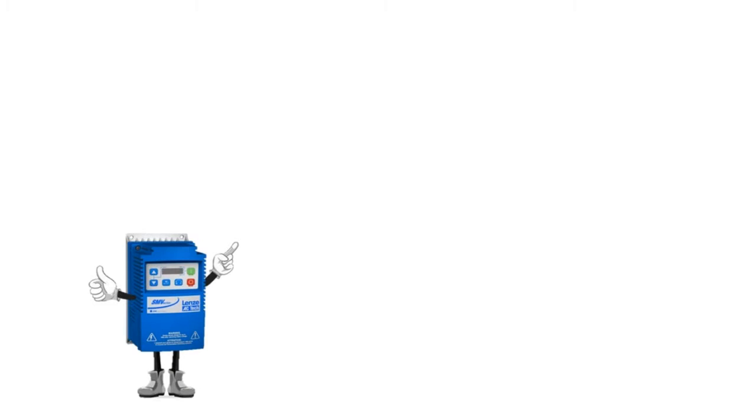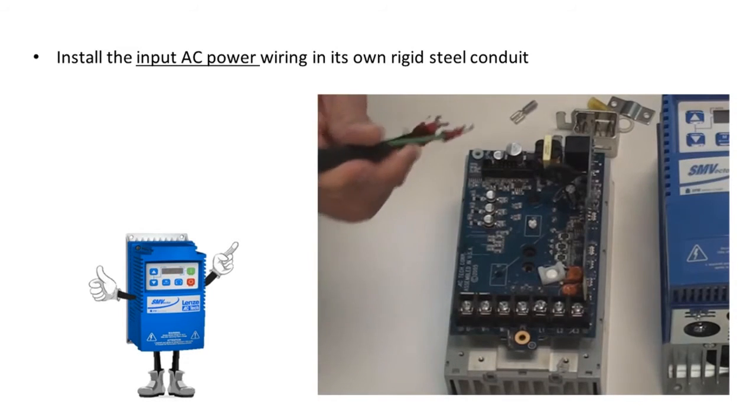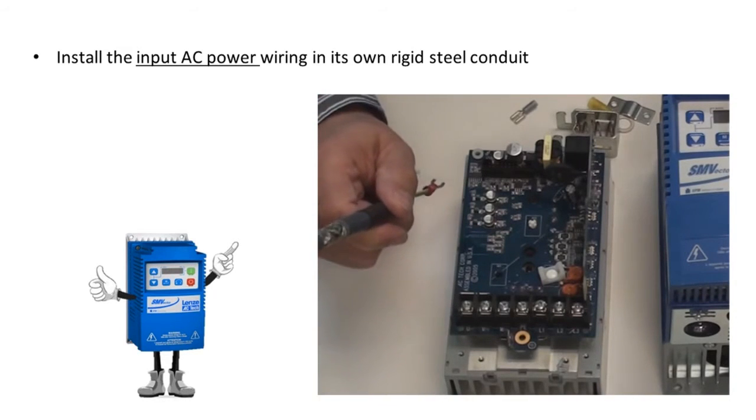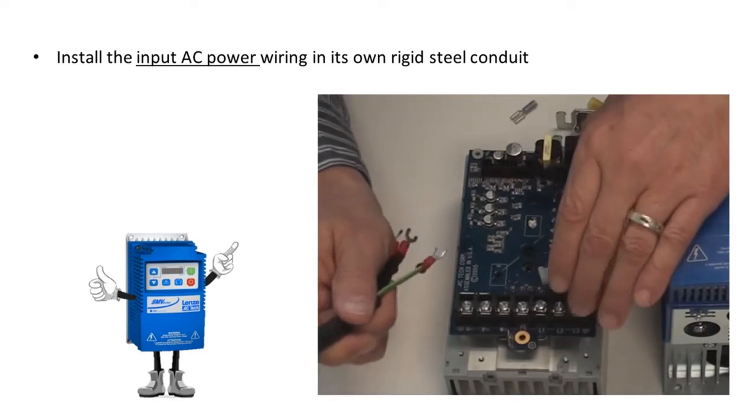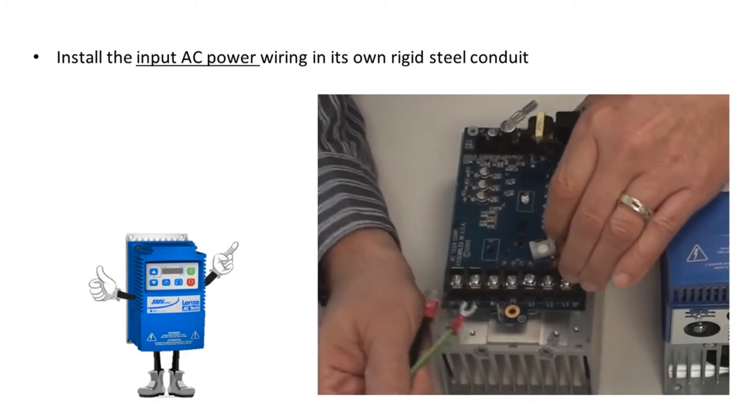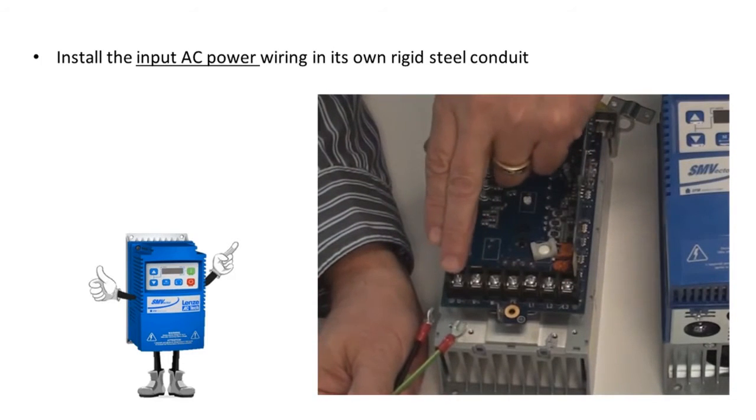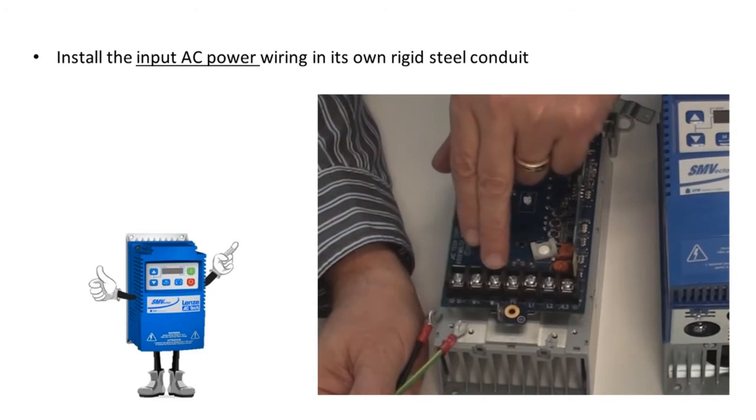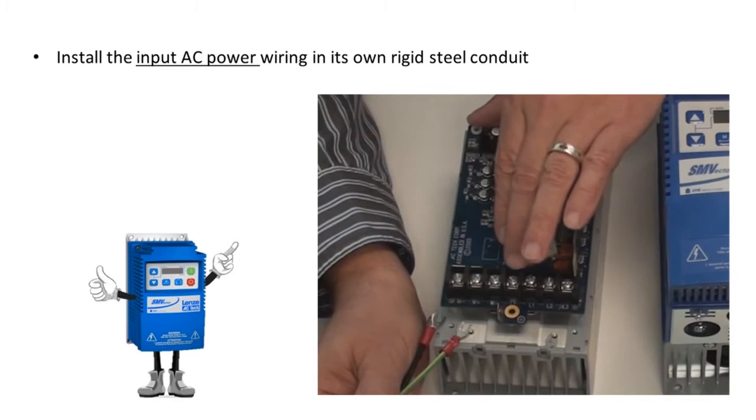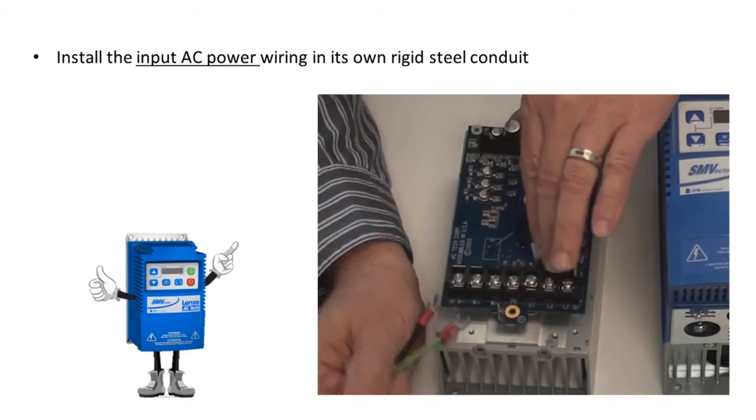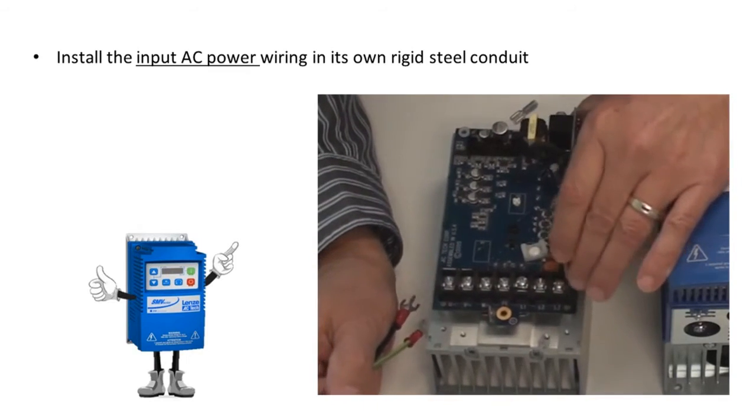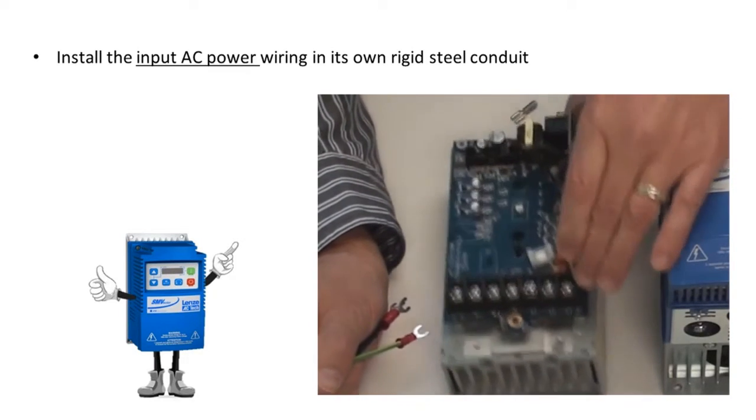One, install the input AC power wiring in its own rigid steel conduit. I have here a cable to illustrate that with the SM Vector drive. After you remove the bottom cover, you can see that we have our output wiring going out to the motor labeled U, V, and W, as well as the two ground screws. And then our input power connections are labeled L1, L2, and in this case L3, three-phase drive.